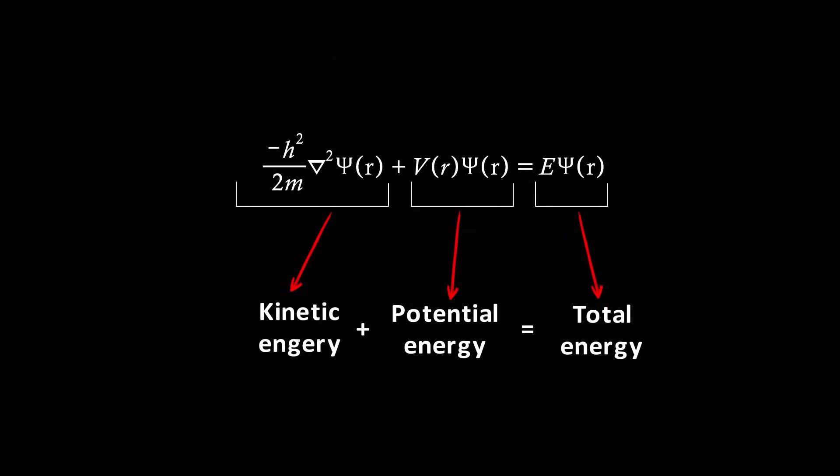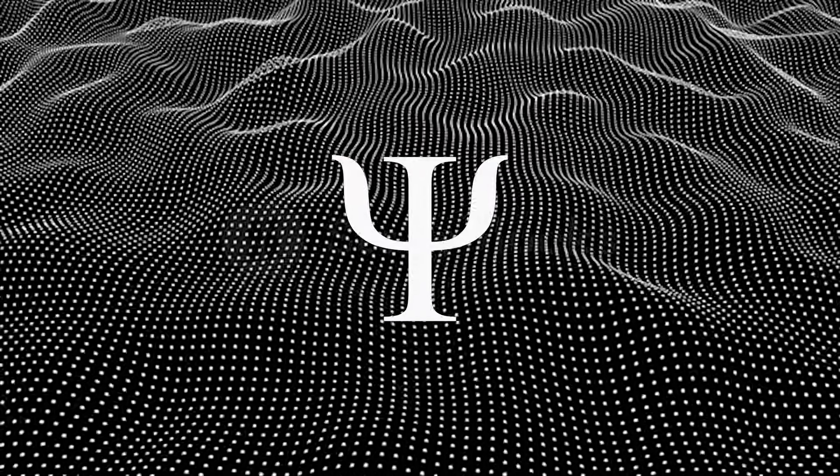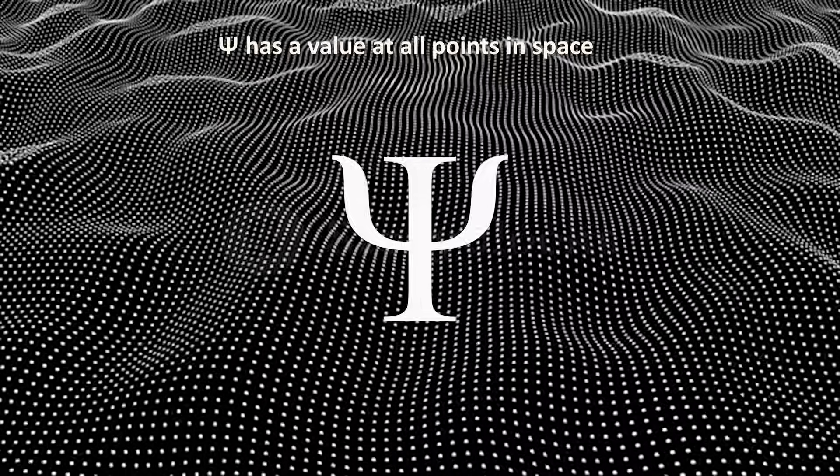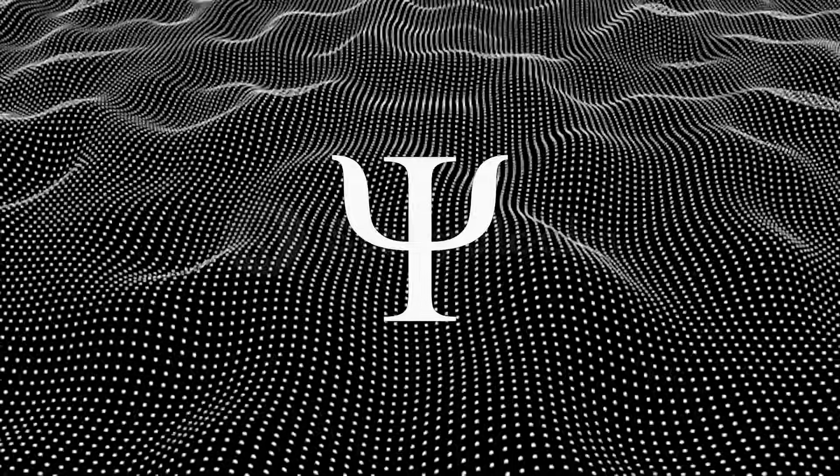It includes a mathematical function called a wave function, which encapsulates all that can be known about a quantum object, like an electron or atom or even a molecule. The object's wave function, usually written as the Greek symbol psi, has a particular value at all points in space. And this value depends on the state that the quantum object is in.